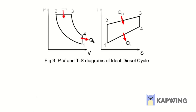I have plotted a graph between volume and pressure, and a second graph between entropy and temperature. From the first graph you can see that to complete a cycle, four processes are required.